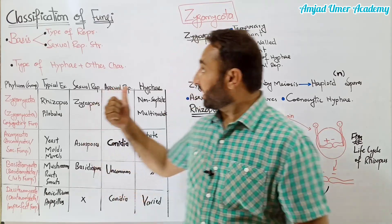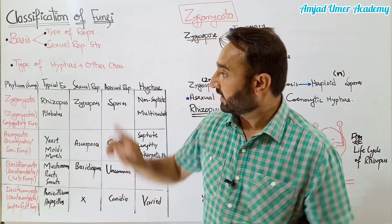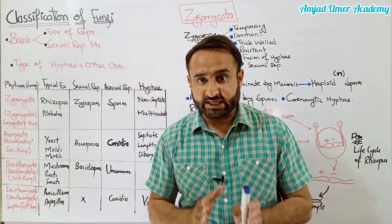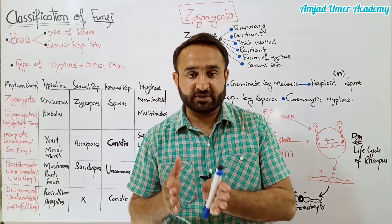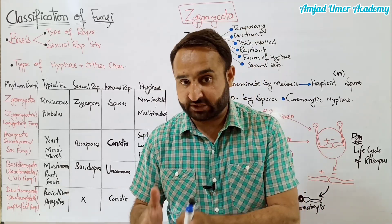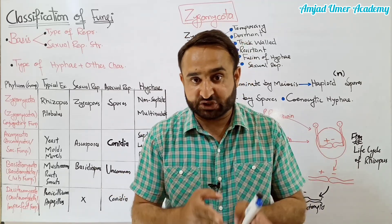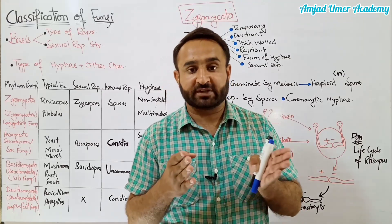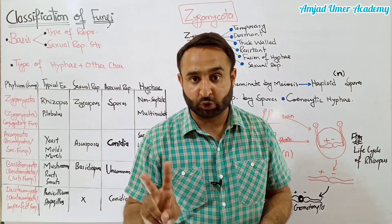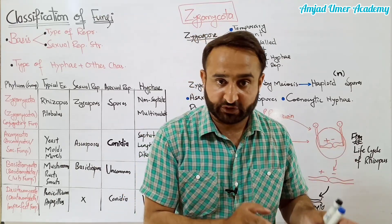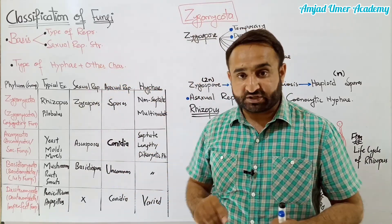This is the basis of classification in each kind of science. So we are talking about the classification of fungi. Fungi ki classification kis base par ki jati hai? Number one: type of reproduction. Fungi ka ek group hai jise imperfect fungi ya Deuteromycota kehte hain - in mein sirf asexual reproduction hoti hai, sexual reproduction nahi hoti. Fungi ke teen aur groups bhi hain: Zygomycota, Basidiomycota, aur Ascomycota - in teen mein sexual aur asexual dono reproduction hoti hai.